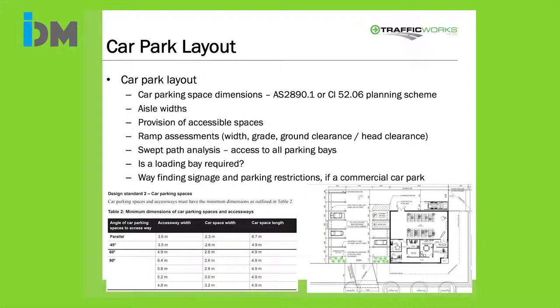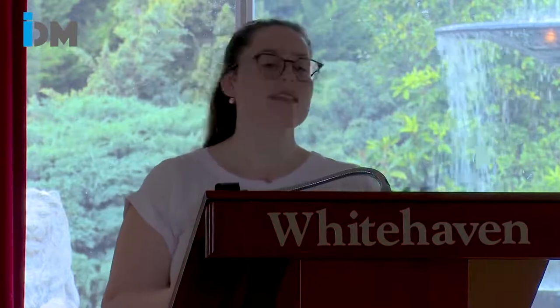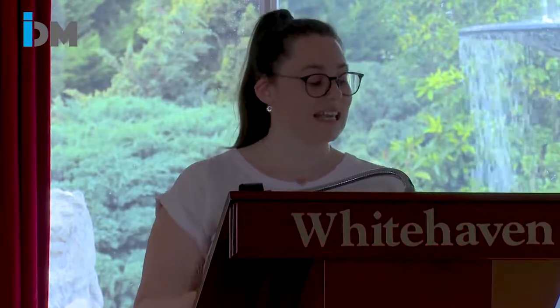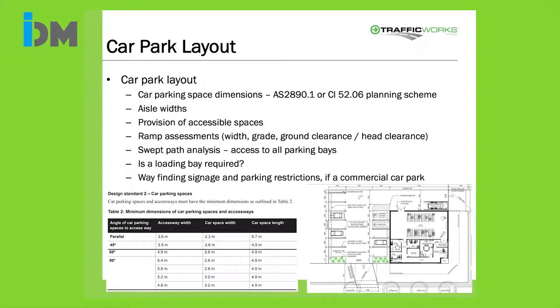Car parking layouts are also important to check. There are dimensions for car parking spaces, access aisles and ramps within the planning scheme as well as in the Australian Standards for car parking. If spaces are designed to the planning scheme dimensions, they're generally accessible. However, it's still important to seek swept path assessments in car parks - particularly near a wall or end of an access aisle - to make sure that even if dimensions are correct, spaces are still accessible from the access aisle to enter and exit.